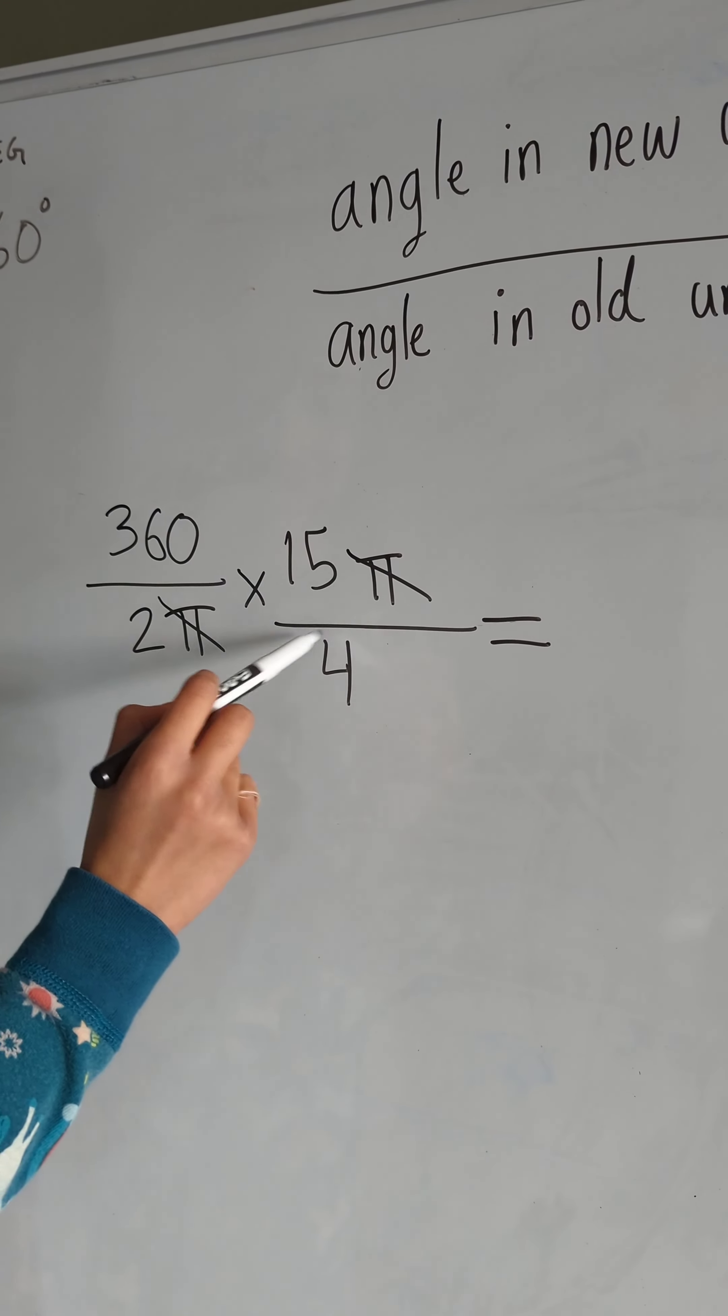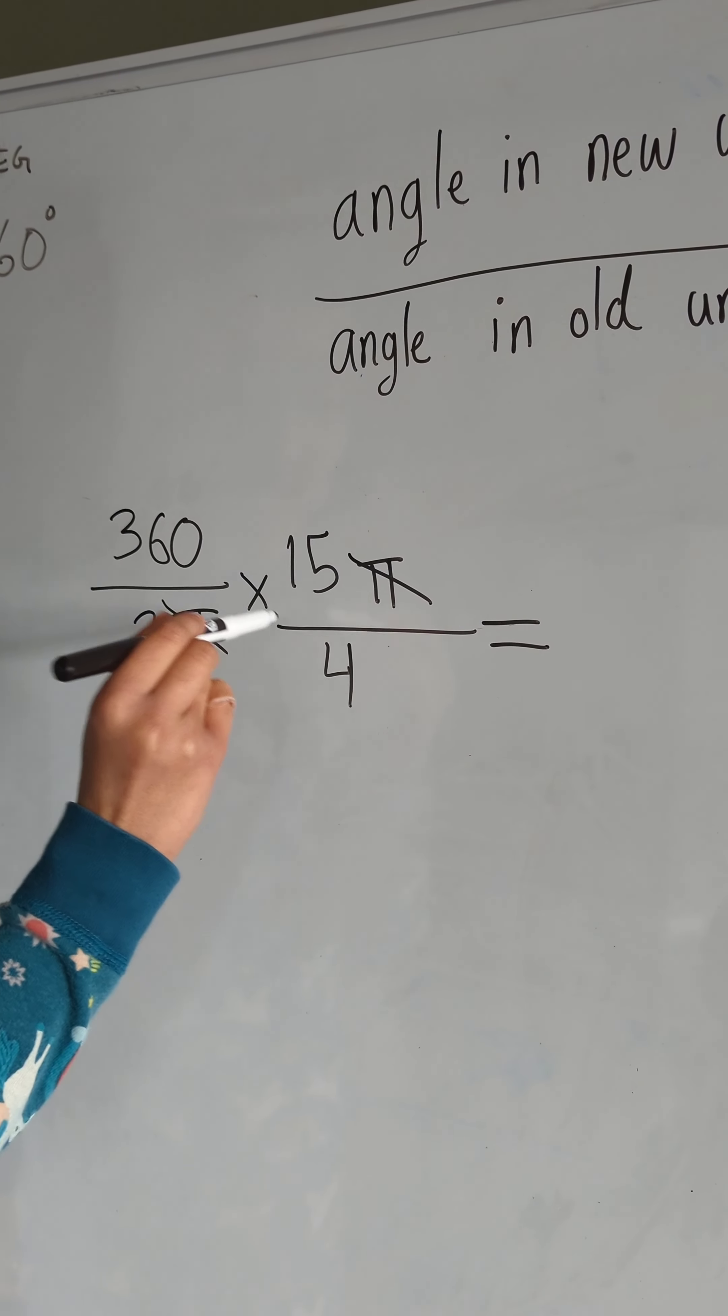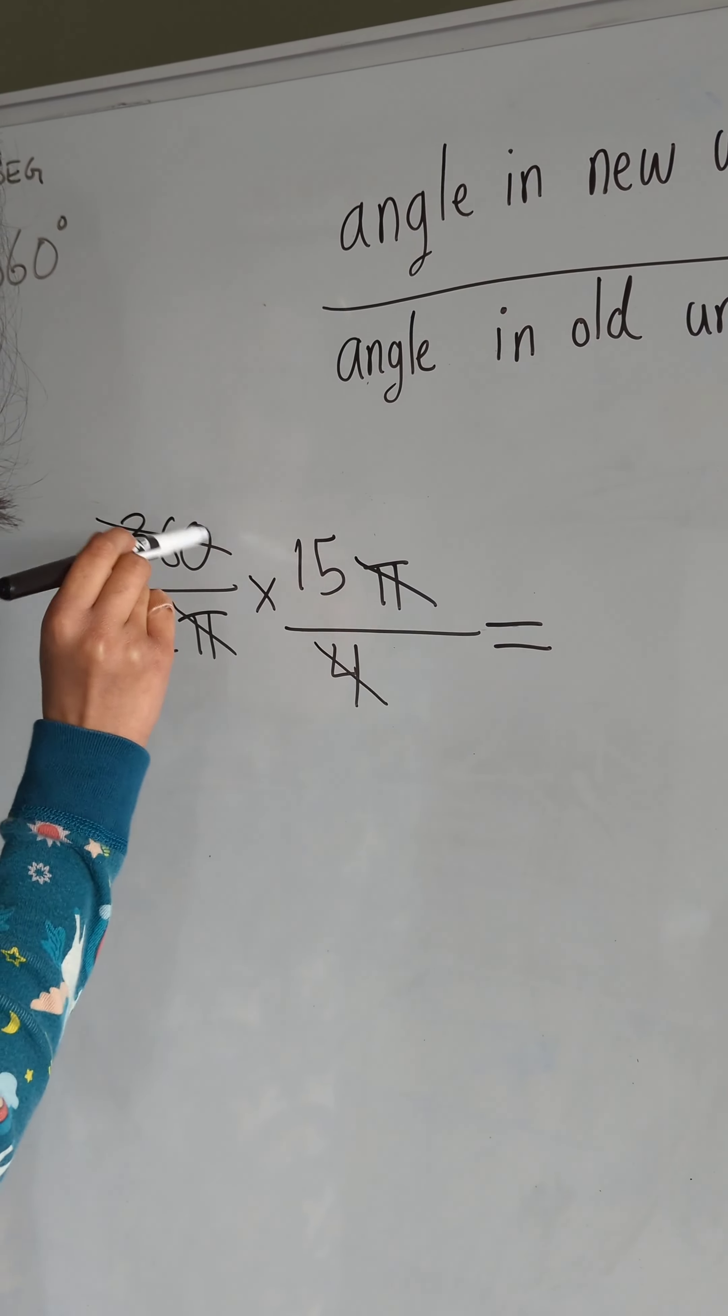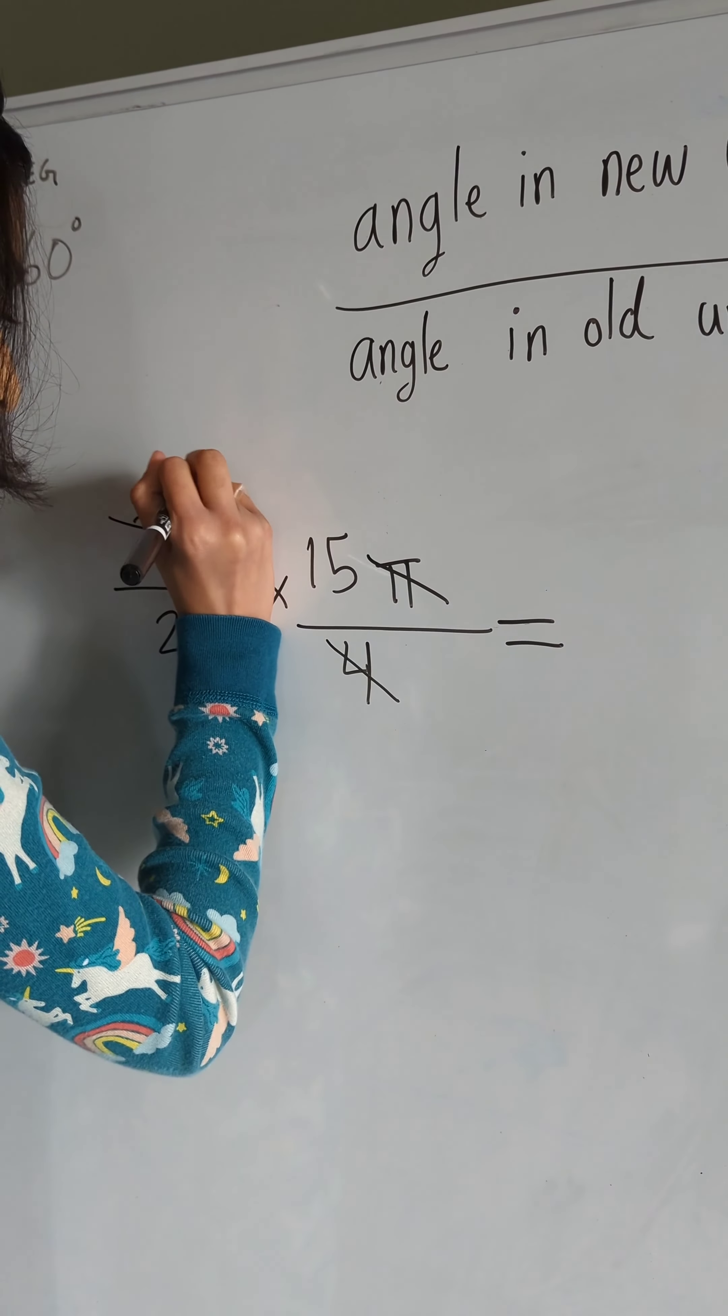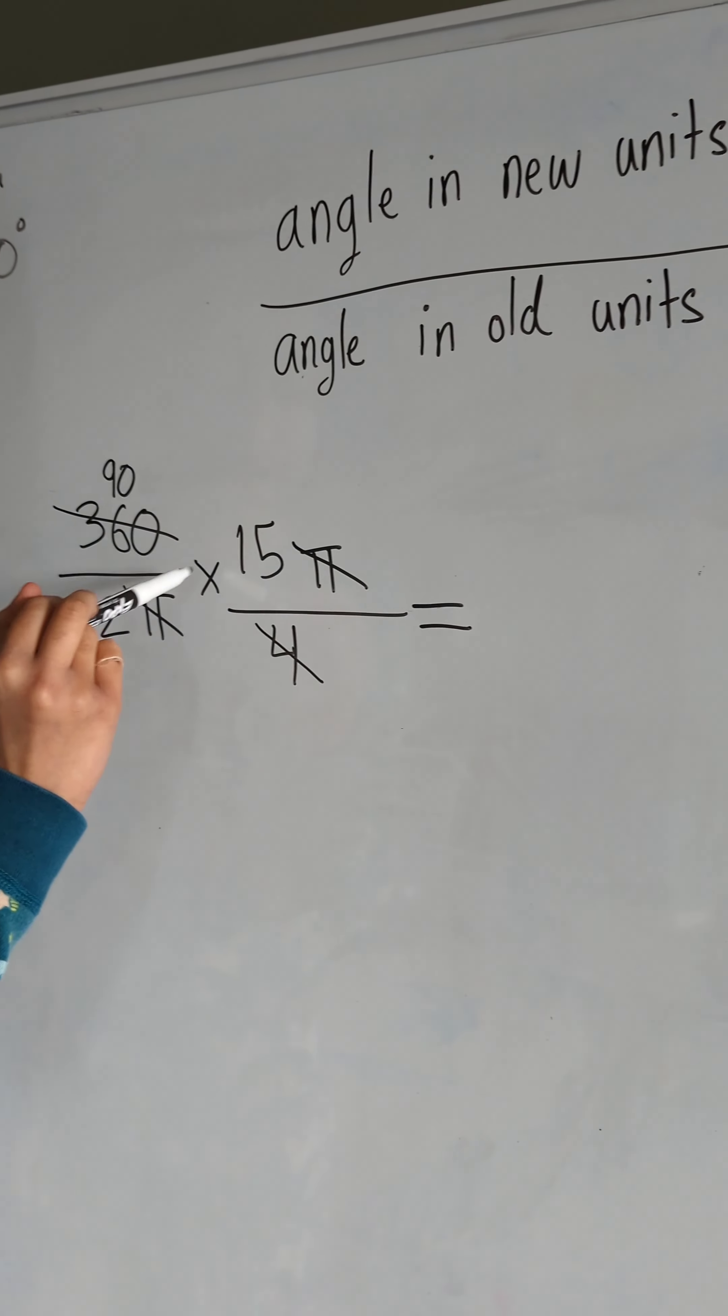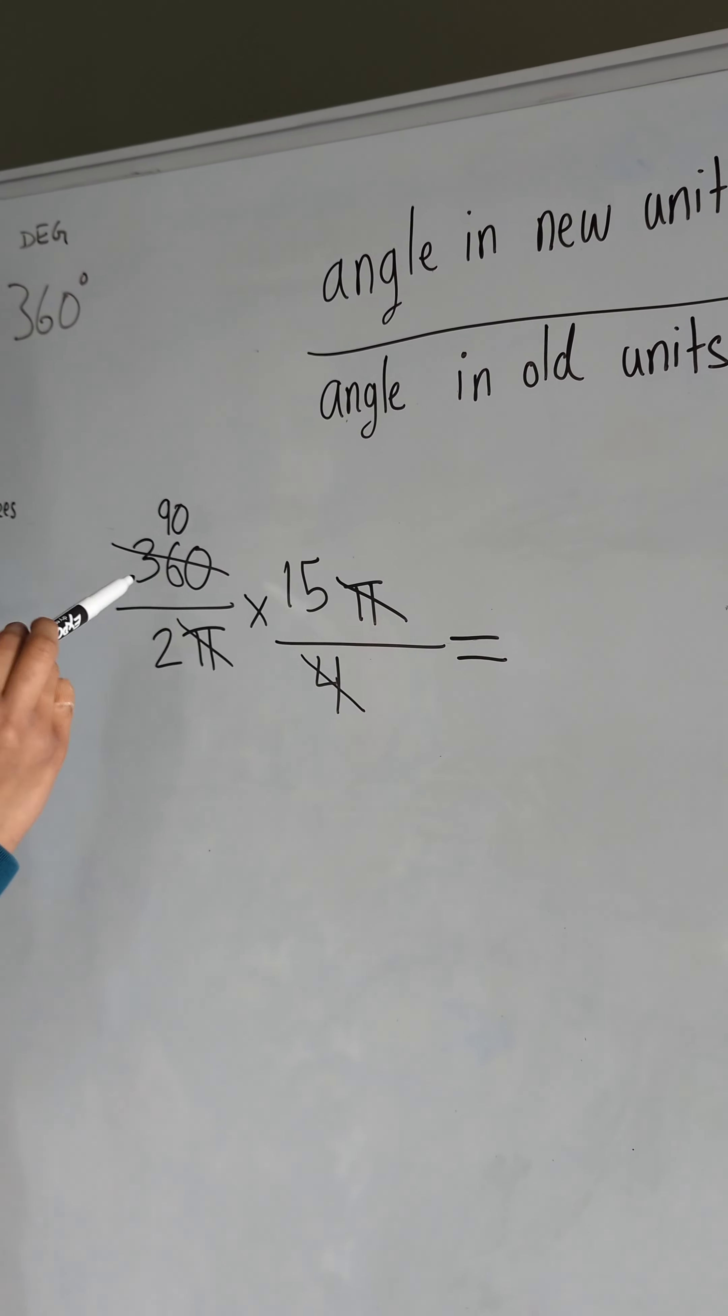4 times 9 is 36, so 4 times 90 would be 360, so we can cross these out and write a 90 up here. It has turned into 90 divided by 2 times 15.